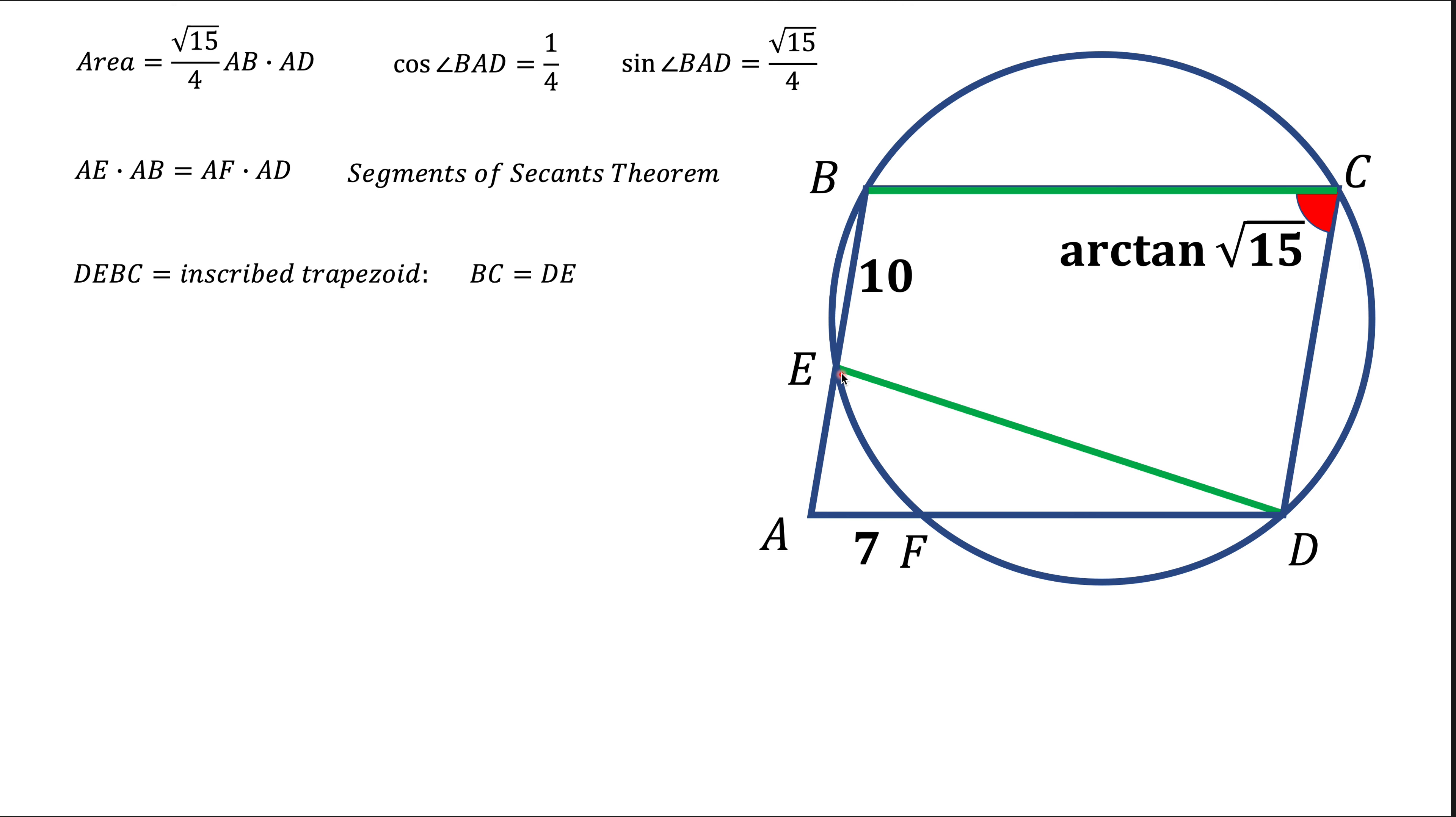Since AD and BC are congruent to each other, since they're part of the parallelogram, AD is also equals to DE. And before we continue going through this problem, for those of you who do not know the fact that inscribed trapezoid has to be isosceles, let's just talk about it a little bit.